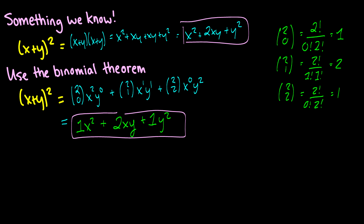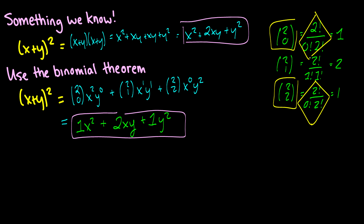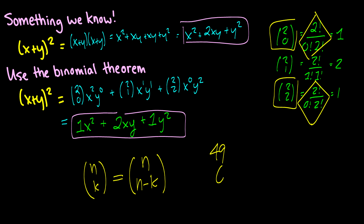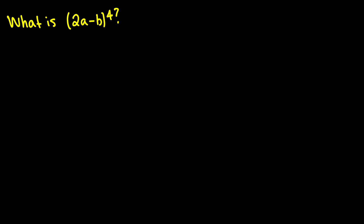Take my word for it, it is true. I also want to point out a cool thing: 2 choose 0 and 2 choose 2 have the exact same formula. Here's an interesting aside for things you can do with combinations: n choose k is the same thing as n choose (n minus k). So you can use these interchangeably. As an example, 49 choose 6 is the same thing as 49 choose 43.